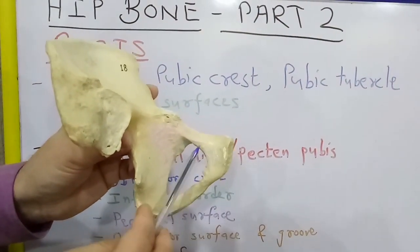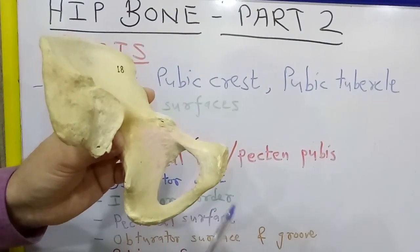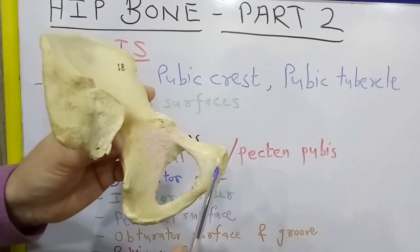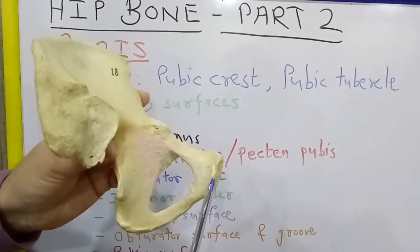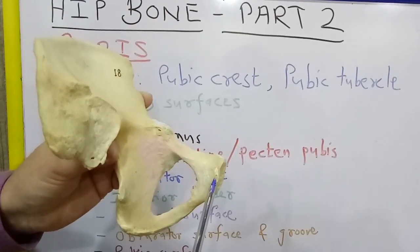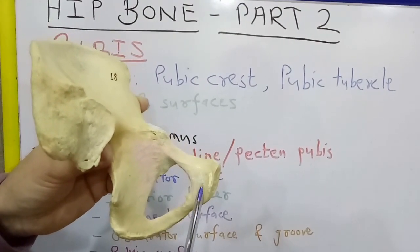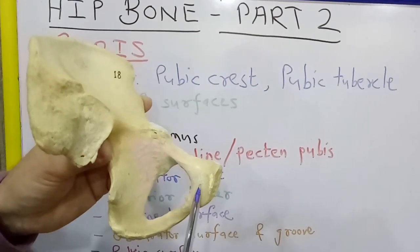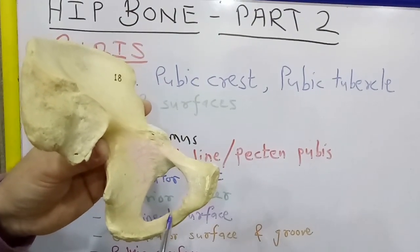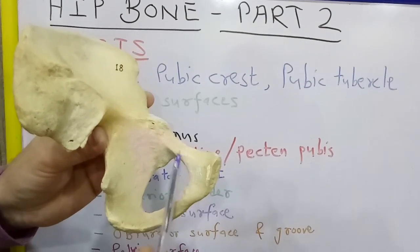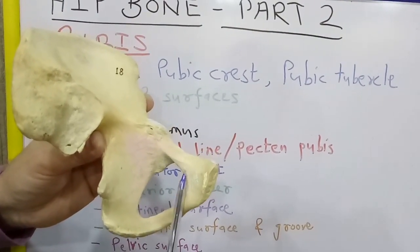Coming to the posterior or pelvic surface of the body: medially, there is attachment of the puboprostatic ligament. In the middle, there is the origin of levator ani muscle. And near the margin of the obturator foramen, this is the origin of obturator internus muscle.